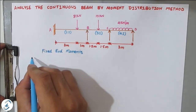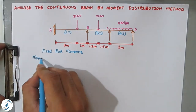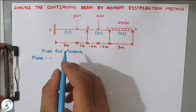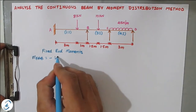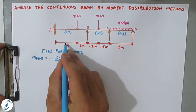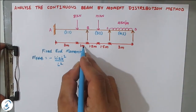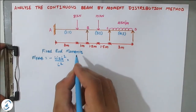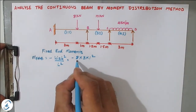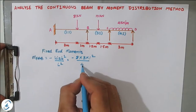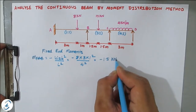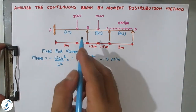For span AB, MF_AB is anti-clockwise, so minus, and since the point load is not at the center, the formula is: minus W·a·b² / L². Here, a = 3m and b = 1m, so: minus 8 × 3 × 1² / 4² = minus 1.5 kN·m.